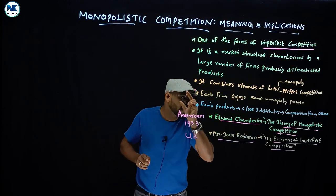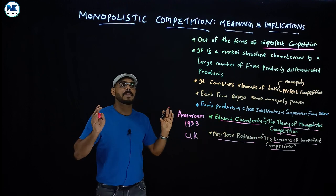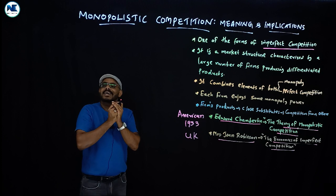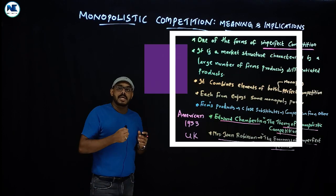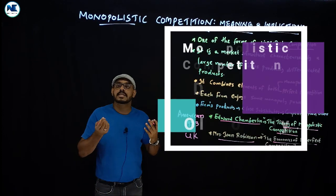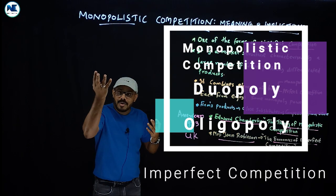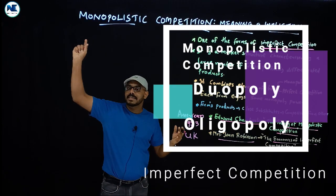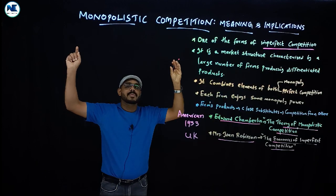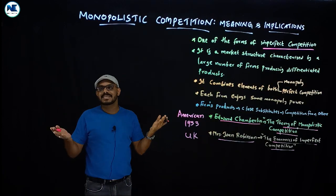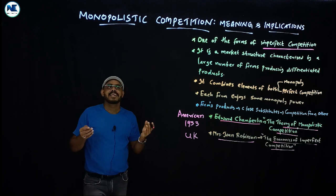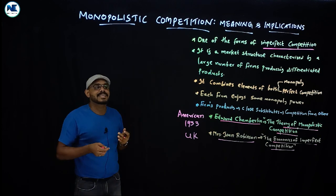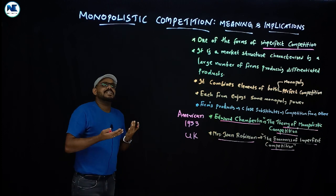Imperfect competition includes monopolistic competition and oligopoly. Perfect competition and monopoly are extreme cases — monopoly has a single seller, high barriers to entry, and no close substitutes. Monopolistic competition lies between these two extremes.